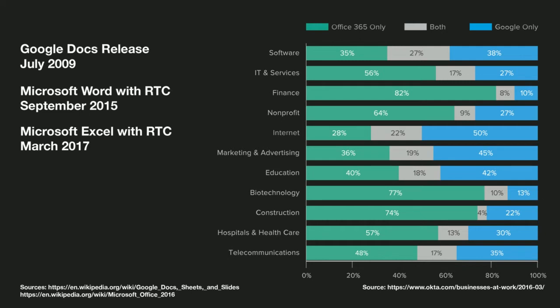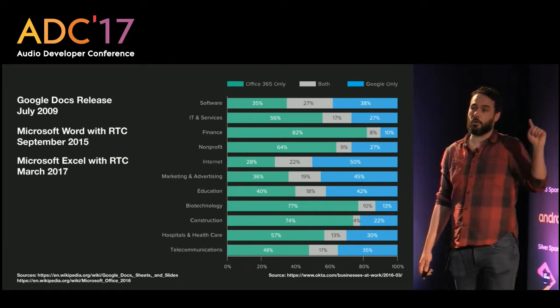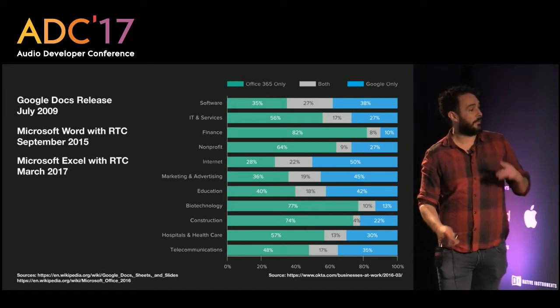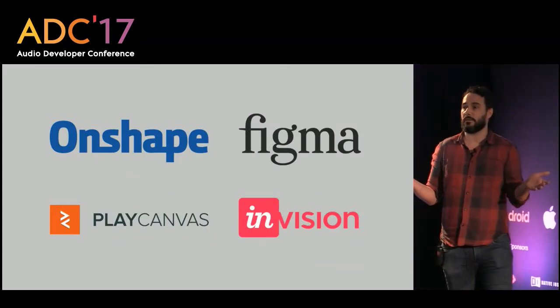From a market perspective, Google Docs was released in 2009. Depending on the field, you can see the market shares between Microsoft Office and Google. In marketing and advertising, Google managed to get almost half the market — in just seven years. That's something really big.